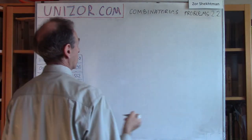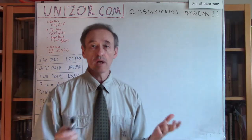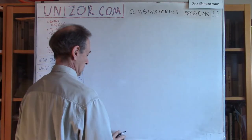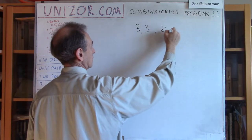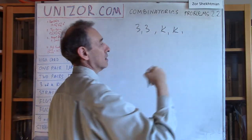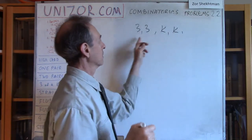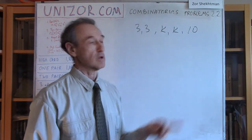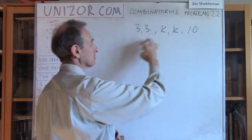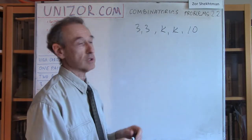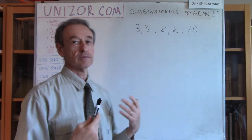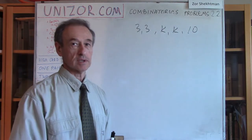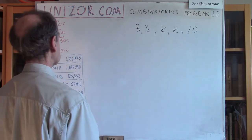Problem number two: two pairs. The combination called two pairs means we have something like two threes and two kings, and the fifth card is something which is not one of these ranks — because if it were, it would make a full house (three plus two). So the fifth card should be something like a ten, which is different. This is a two-pair combination with five cards of certain suits. So I'm talking about ranks right now: these are five cards whose ranks form the two-pair combination — one pair, another pair, and a completely different fifth card.